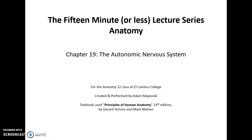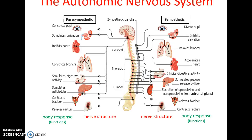Welcome to the fifteen-minute-or-less lecture series: Human Anatomy, Chapter 19 - The Autonomic Nervous System. The autonomic nervous system is broken down into two divisions: the parasympathetic division and the sympathetic division. Both divisions innervate the exact same structures, but they usually have opposite responses. For instance, the parasympathetic division slows the heart's rate of beating, while the sympathetic division accelerates it.